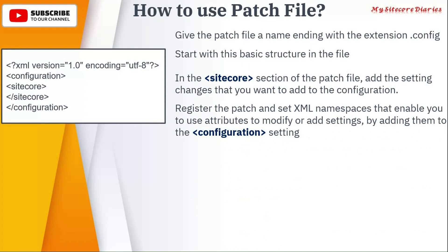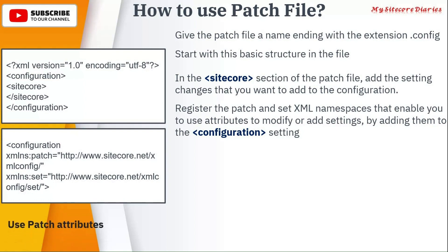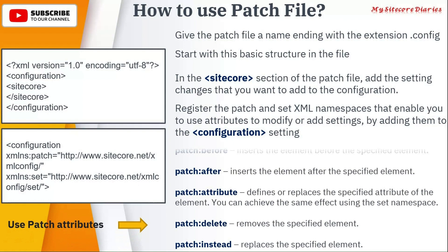You have to register the patch and set the XML namespace, which enables you to use attributes to modify or add settings by adding them into the configuration settings. When using this configuration, you have to add a namespace which allows you to modify or add setting configuration. You have to set the patch namespace and also the set namespace.